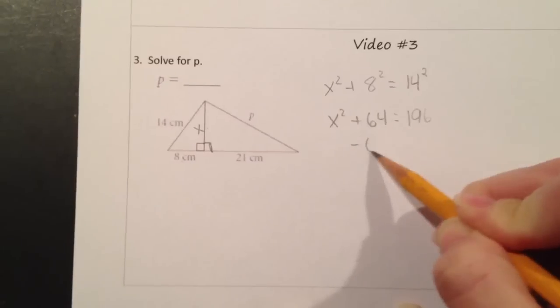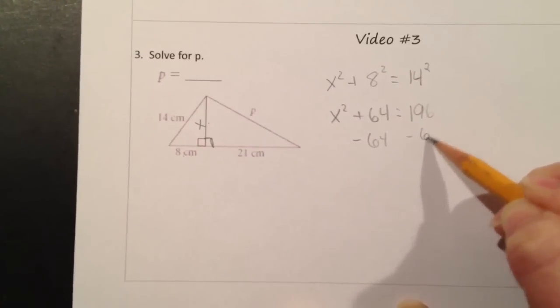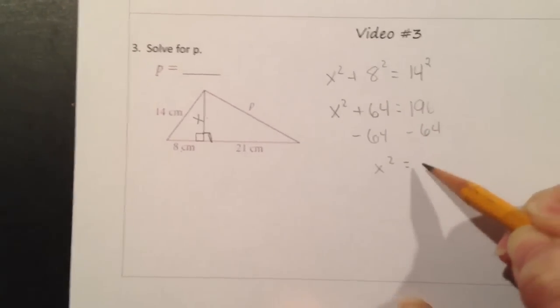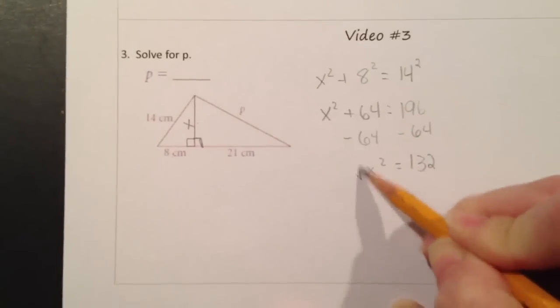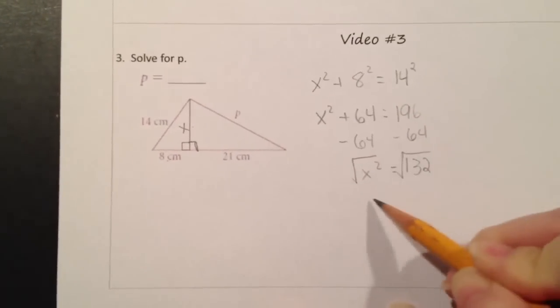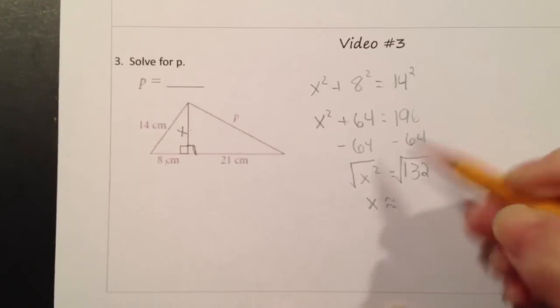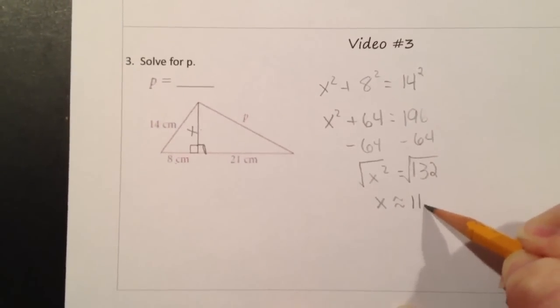To get x squared by itself, we're going to subtract 64 from both sides. So x squared is equal to 132. And to get x by itself, we're going to take the square root of both sides of the equation. So x is approximately, we're going to round to the tenths place, 11.5.